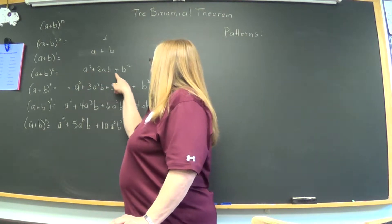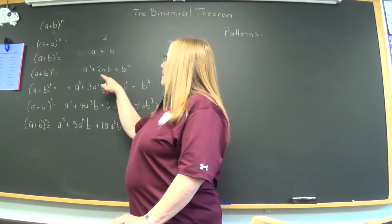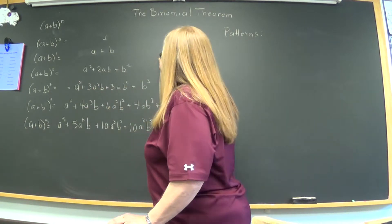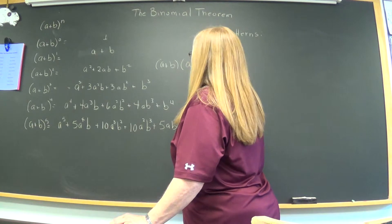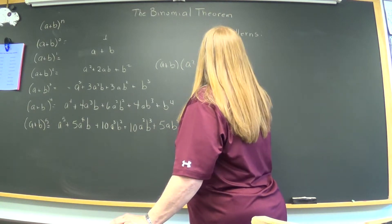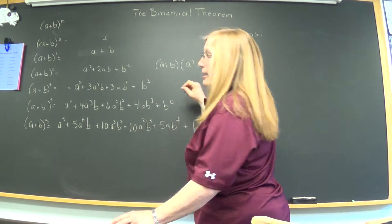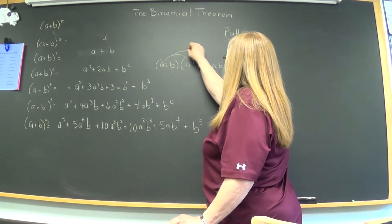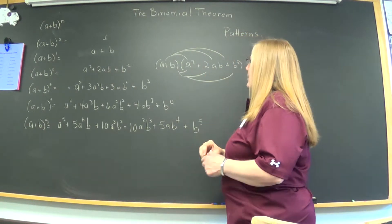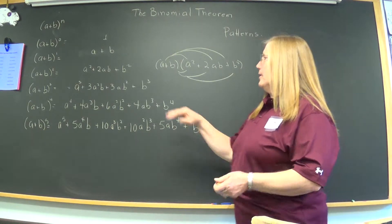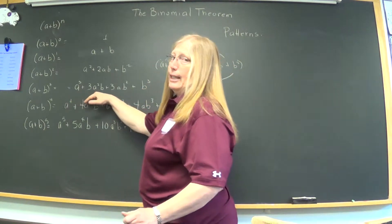When you take this answer and multiply it by the binomial a plus b again, I actually had Zach up here doing that as you were leaving the room. Did you notice? He was distributing the a, distributing the b, there were six steps, adding like terms, and this is what he got, right there.